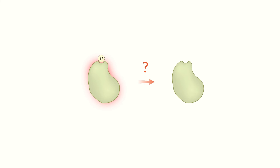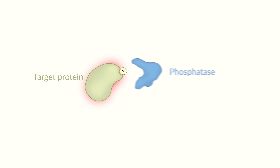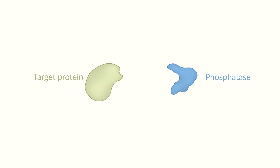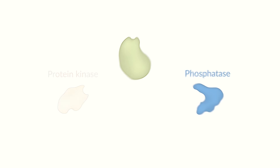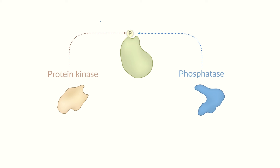Have you ever wondered how the signal is switched off? Another group of enzymes, the phosphatases, are able to remove the phosphate group from the target protein. Phosphorylation is therefore a reversible protein modification that is regulated by a balance of kinase and phosphatase activity.